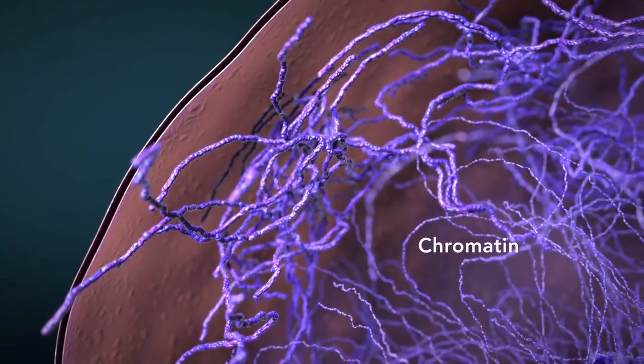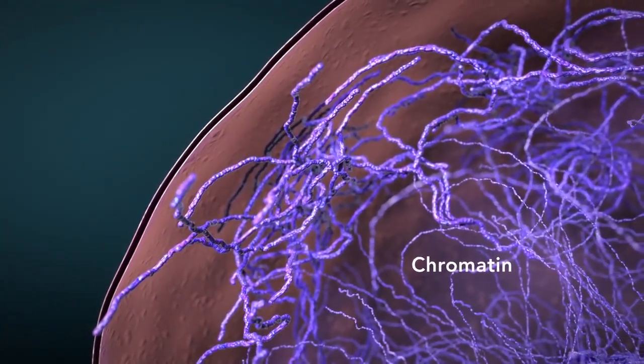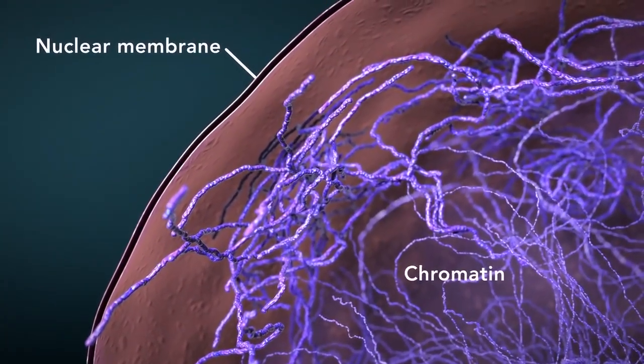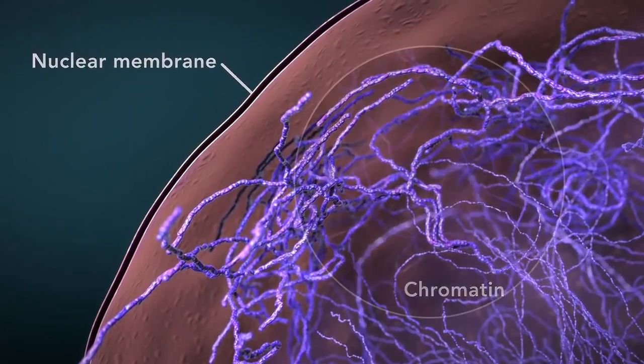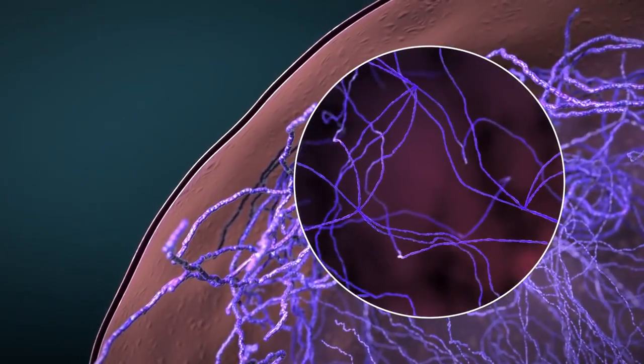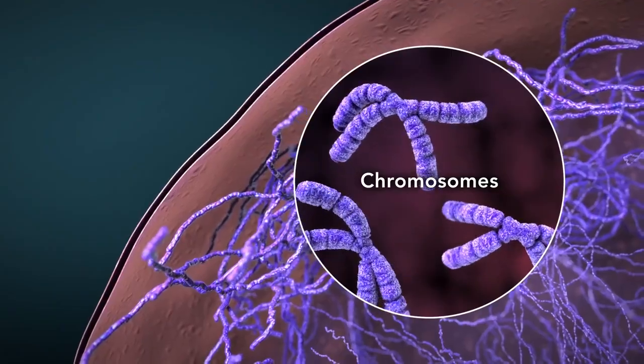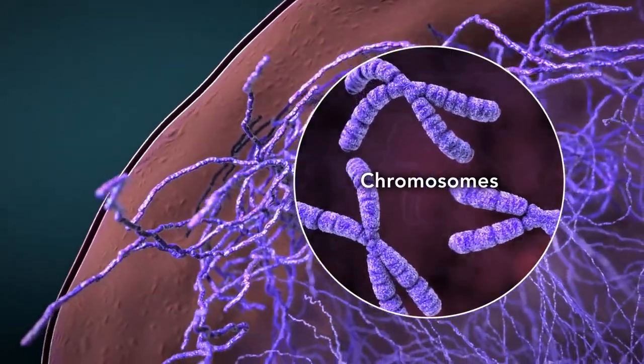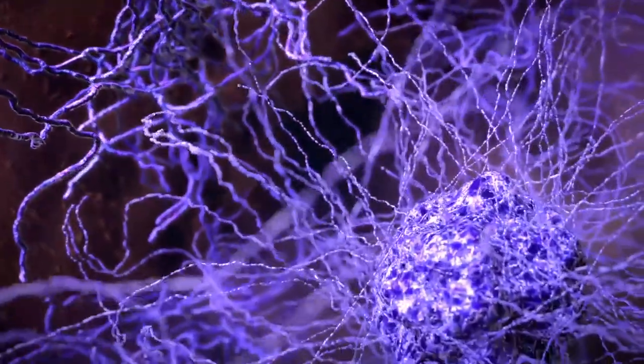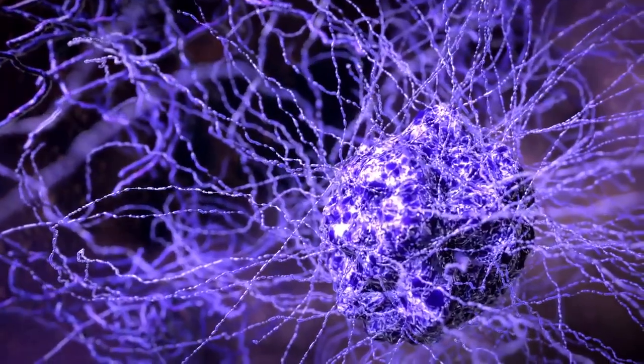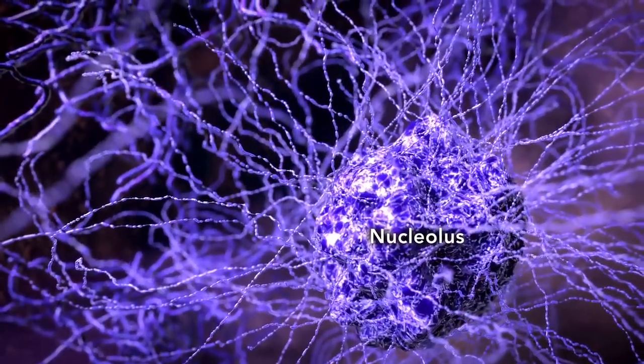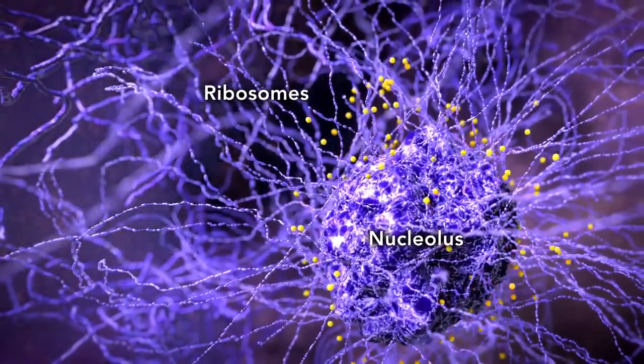Chromatin is the tangled spread out form of DNA found inside the nuclear membrane. When a cell is ready to divide, DNA condenses into structures known as chromosomes. The nucleus also contains a nucleolus, which is a structure where ribosomes are made.